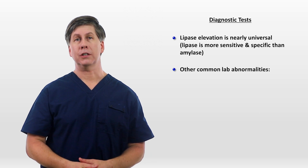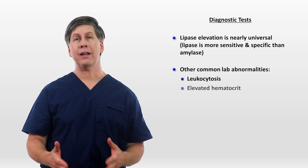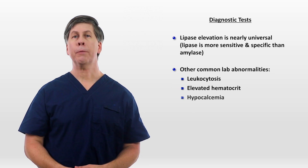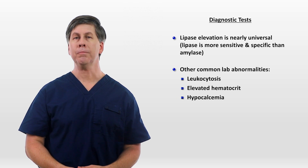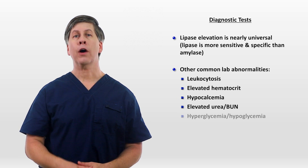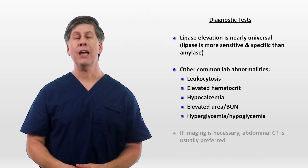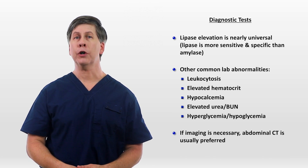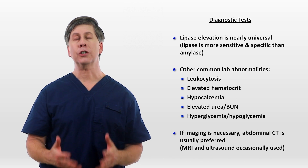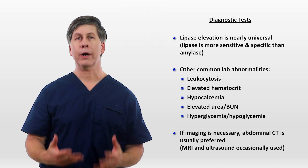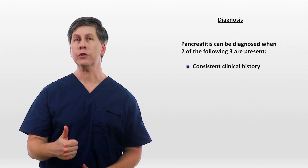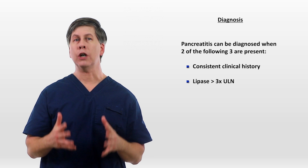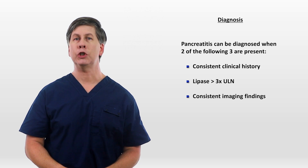Other common lab abnormalities include leukocytosis, an elevated hematocrit from hemoconcentration, hypocalcemia — which can mask the rare patient who develops pancreatitis due to hypercalcemia — elevated urea or BUN, and either hyper- or hypoglycemia. If imaging is necessary, abdominal CT is usually preferred, though MRI and ultrasound are occasionally used, for example in cases of kidney injury or pregnancy. Overall, pancreatitis can be diagnosed when two of the following three things are present: a consistent clinical history, a lipase above three times the upper limit of normal, and consistent imaging findings.